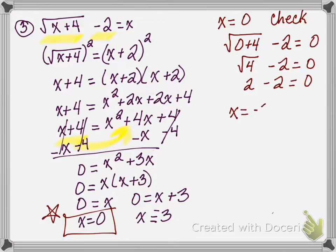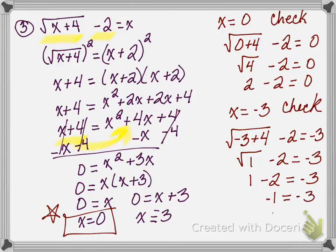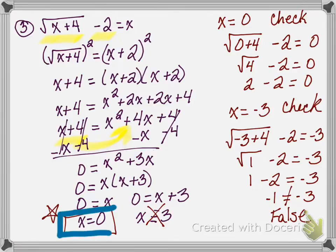Now I will check x equals negative 3 by plugging it into the original equation. I have the square root of negative 3 plus 4, minus 2, equals negative 3. The square root of positive 1 is 1, and 1 minus 2 is negative 1, which is not equal to negative 3. This is false, so x equals negative 3 is an extraneous solution and is not part of our answer. The only answer is x equals 0.